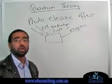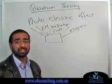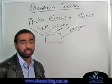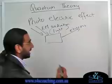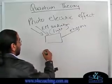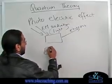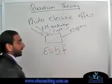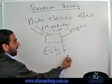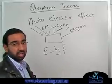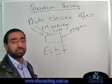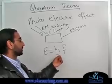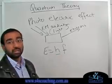A photon is the smallest amount of radiation at a given frequency. The energy that a photon has is given by the formula E equals hf, where h is Planck's constant and f is the frequency of light. So the energy of a photon is equal to Planck's constant times the frequency.